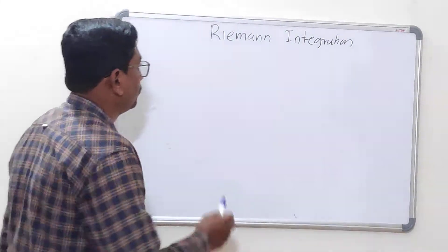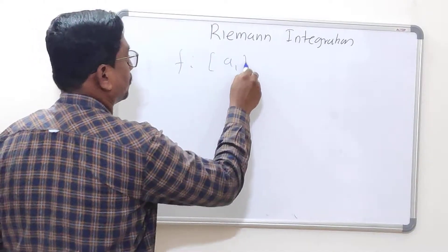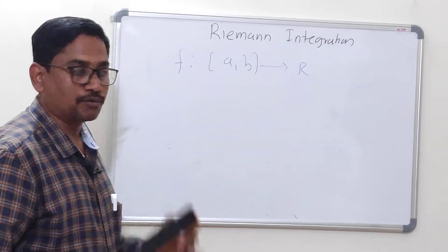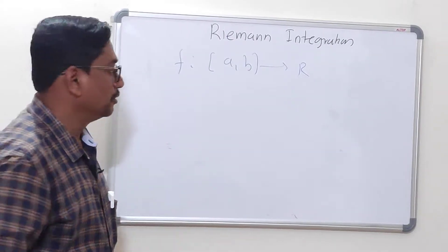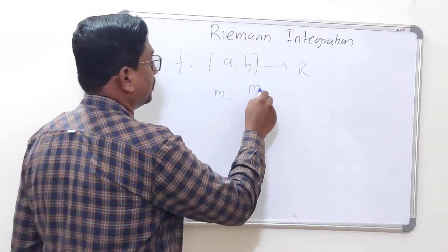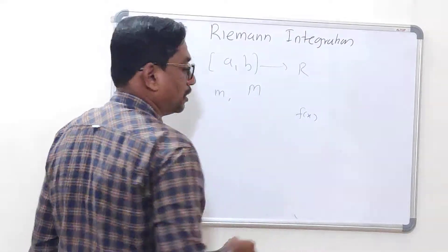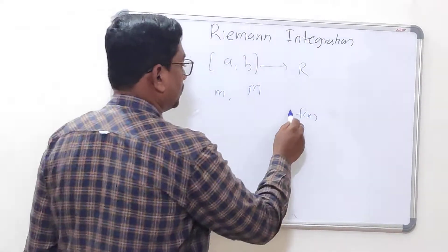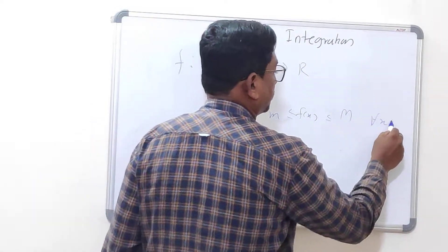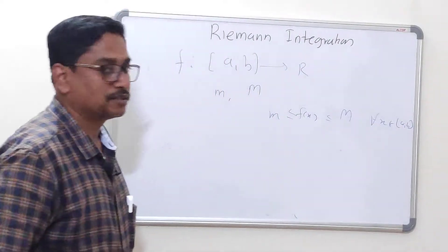Initially we have a function f which should be defined on the closed interval [a, b] and should be real-valued. This function has to be a bounded function. What do we mean by a bounded function? A bounded function means there exist numbers m and M, real numbers, such that f(x) for every x in the closed interval [a, b] lies between these two numbers. Such types of functions are called bounded functions.